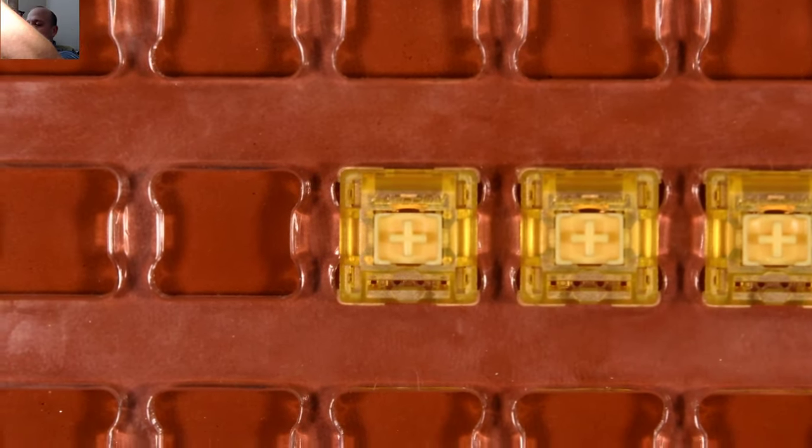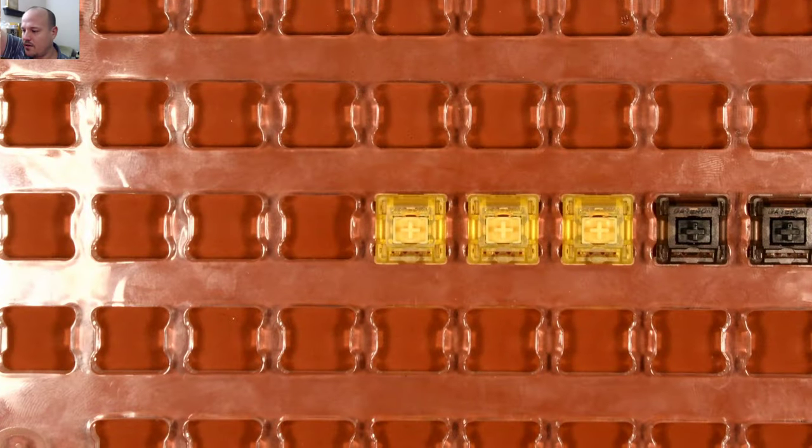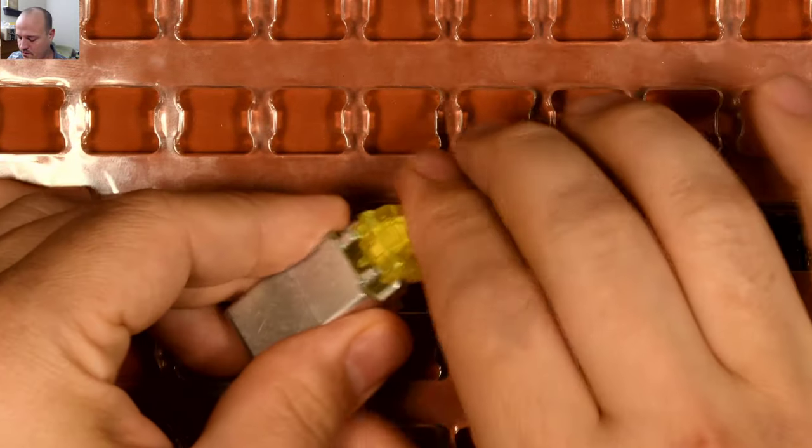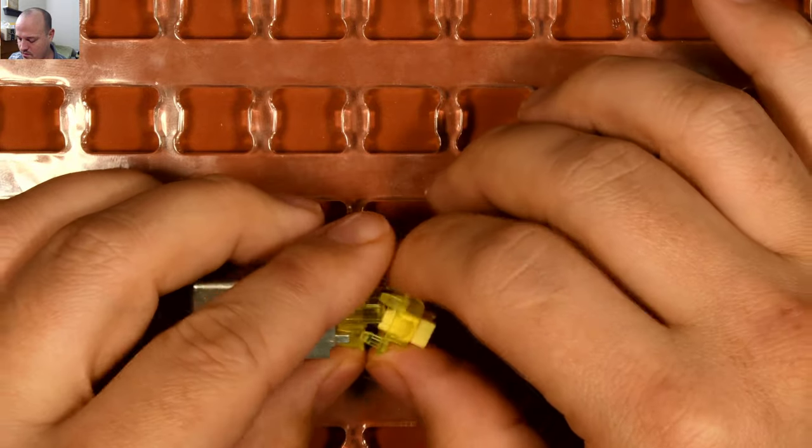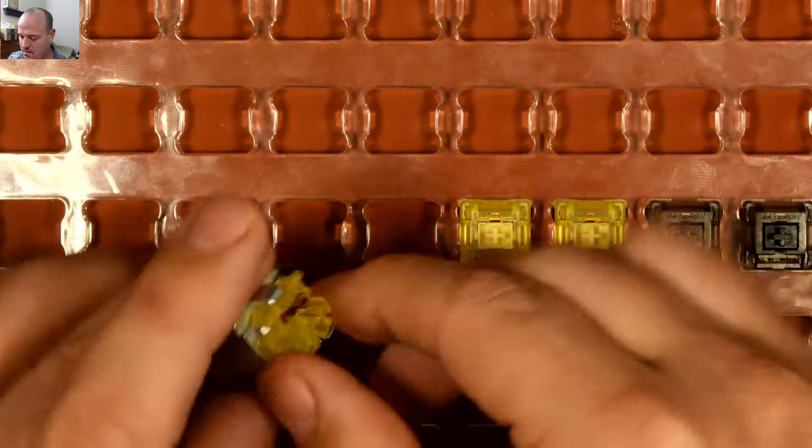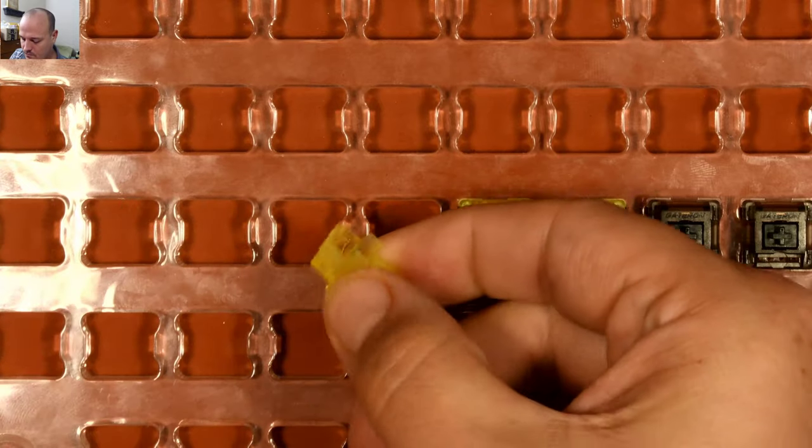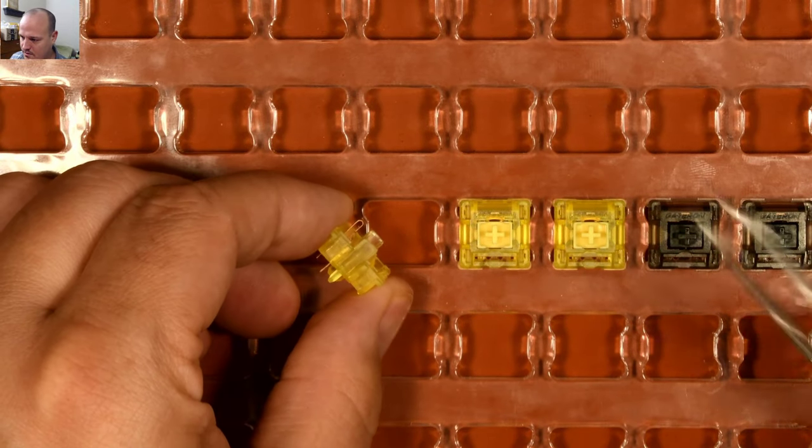The next question: do the leaves come out too easily on these, like some people are saying? Well, we can try a few of them and see. Let me try the newer ones first, the yellows. So the leaf they're talking about is this one.